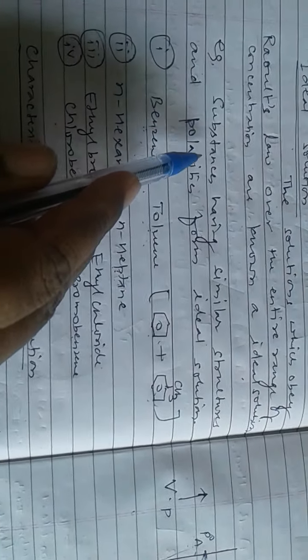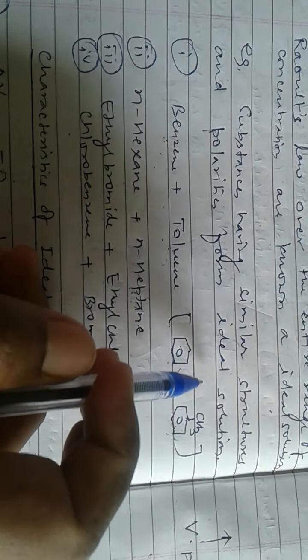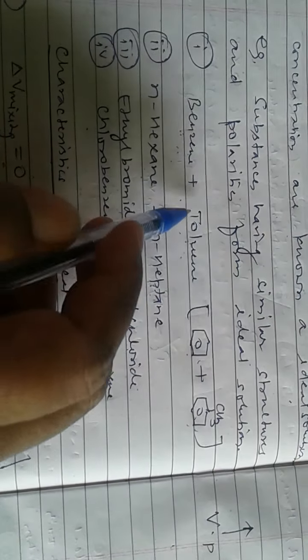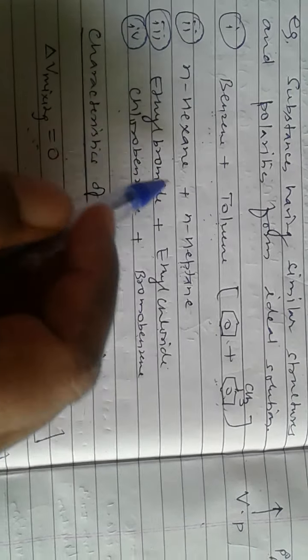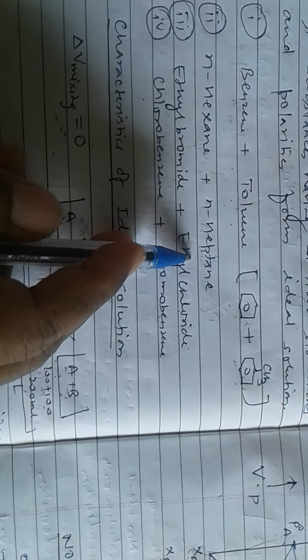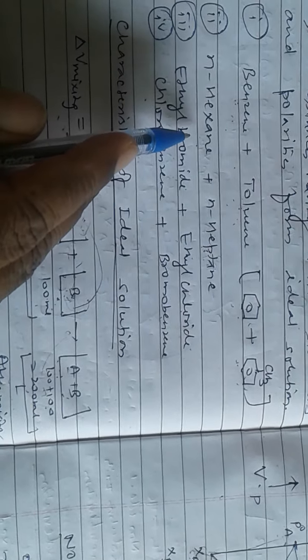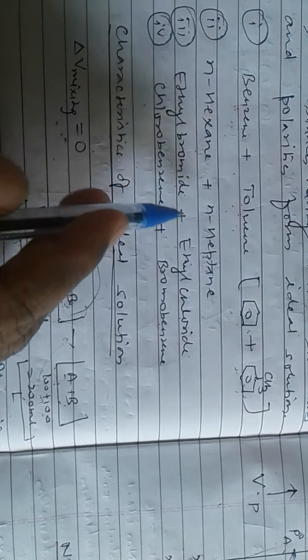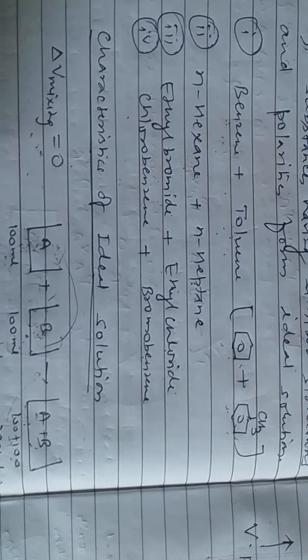Substances having similar structure and polarity form ideal solutions. Benzene and toluene have almost the same structure and polarity — both are non-polar — so they form an ideal solution. Similarly, n-hexane and n-heptane is also an ideal solution example. These are a few examples of ideal solutions.